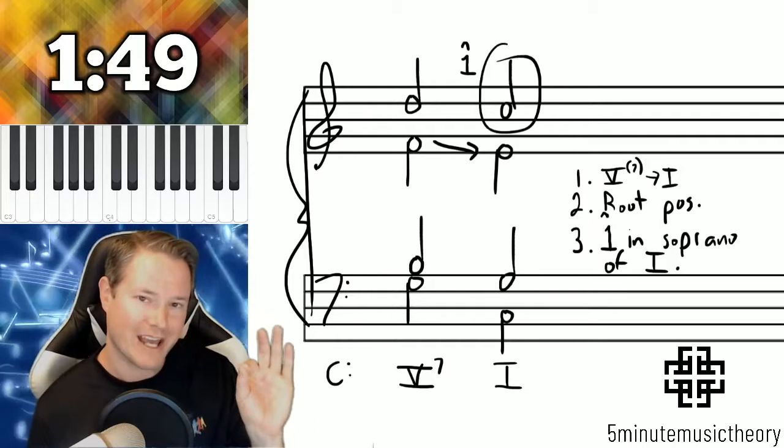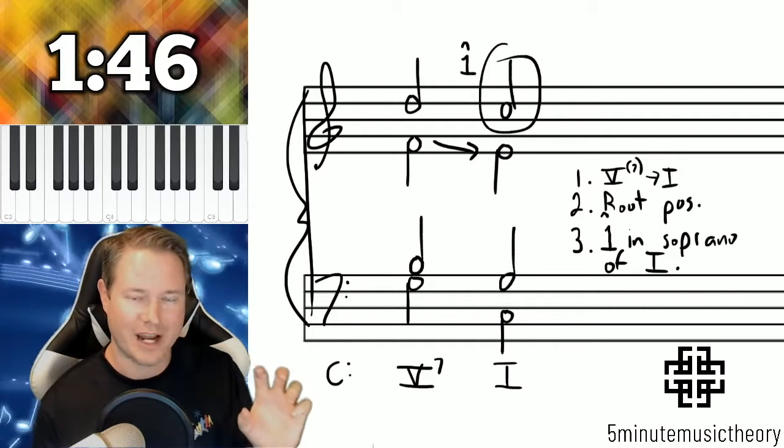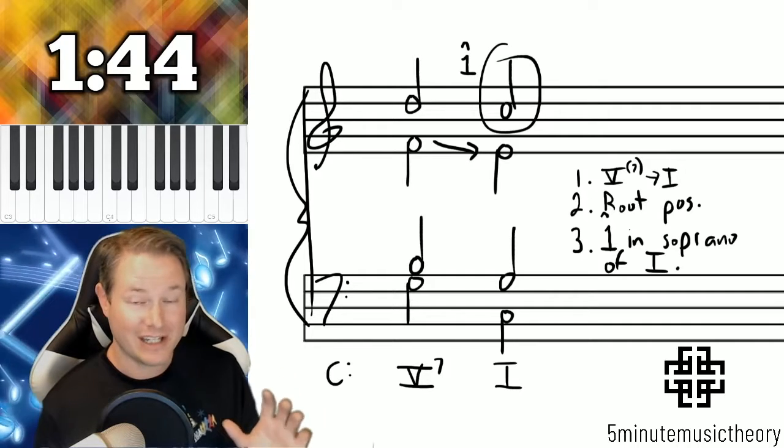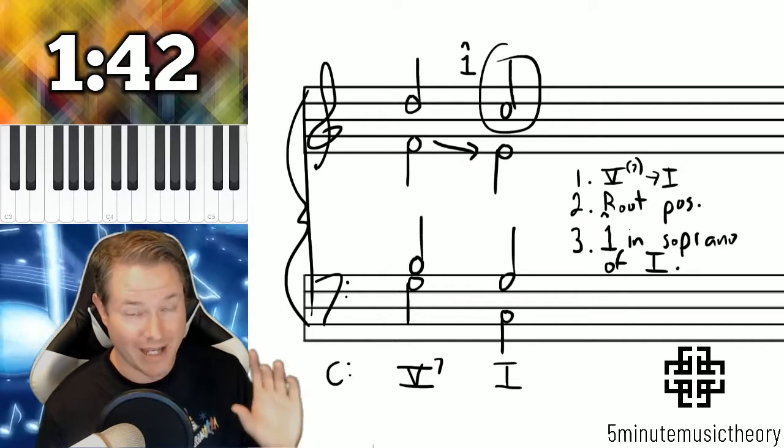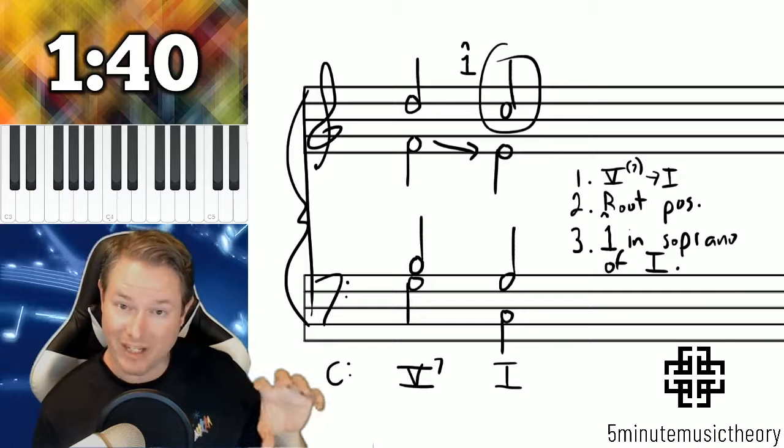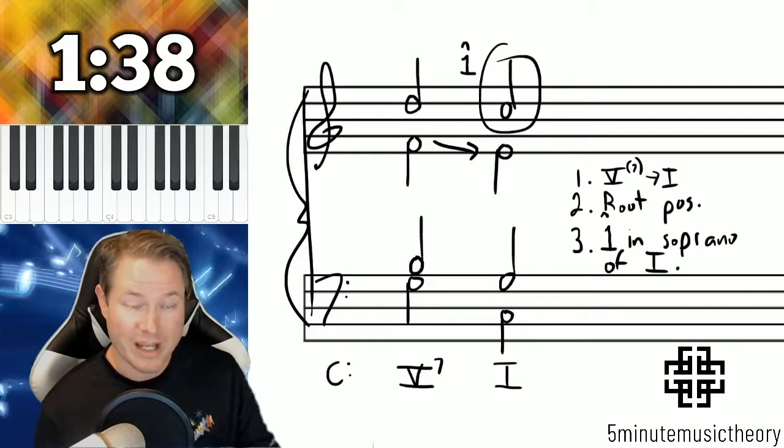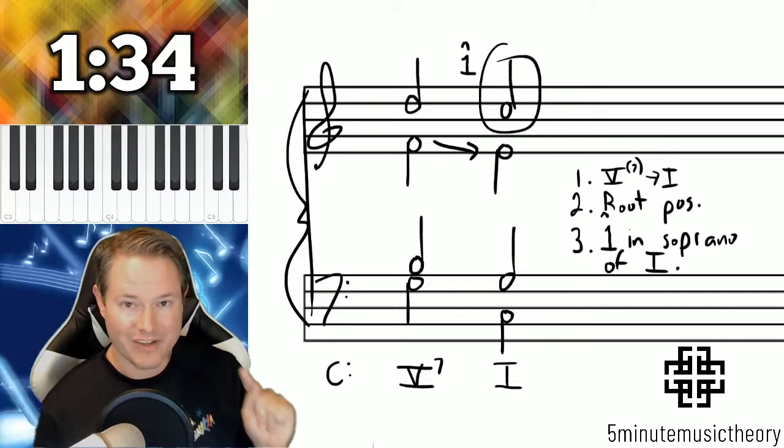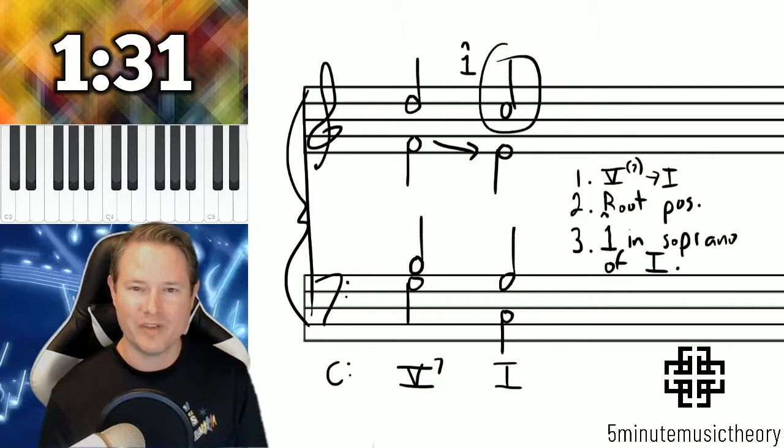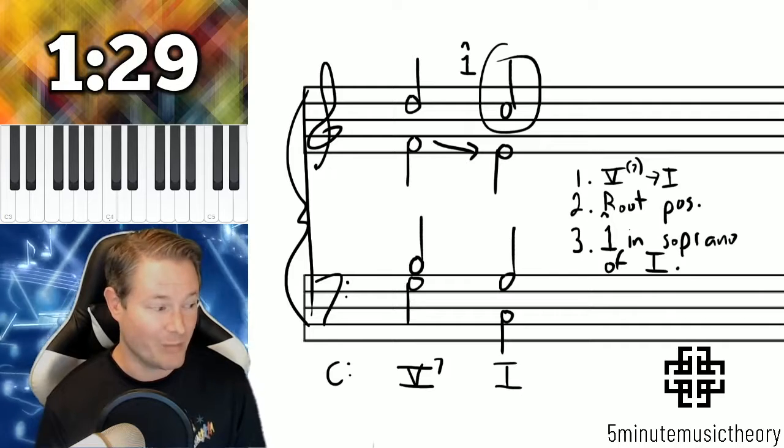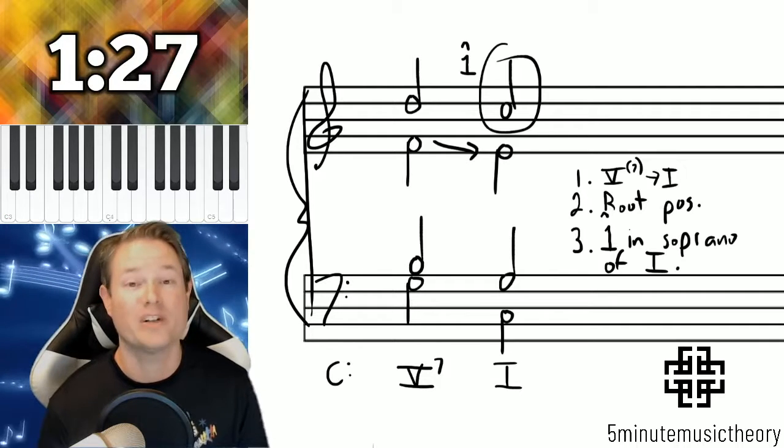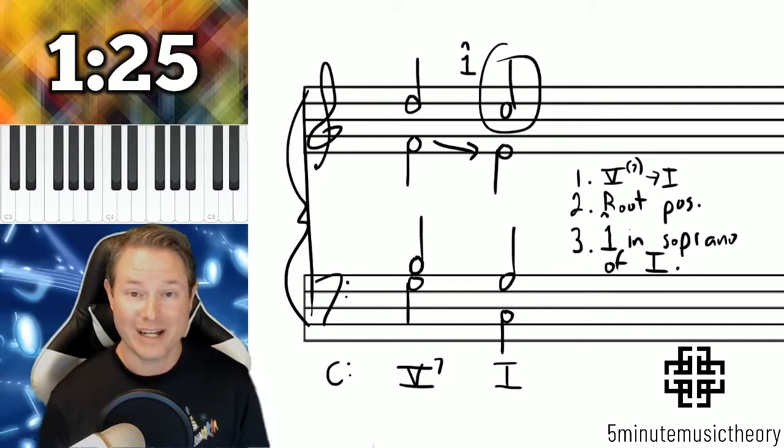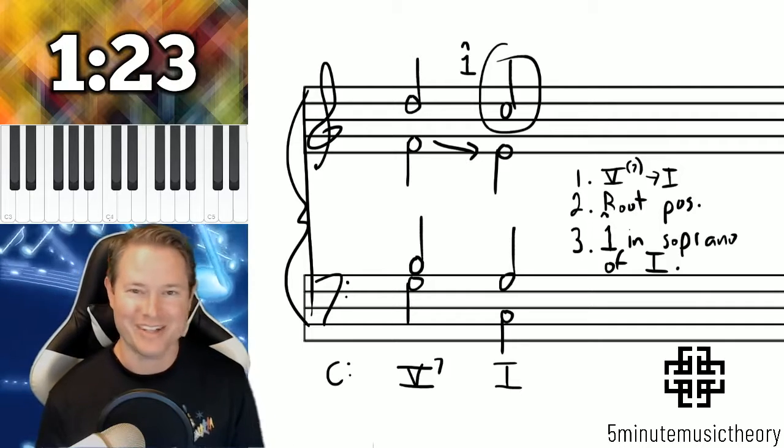And the P, the perfect part of that, the reason it's perfect is this is the strongest type of cadence. And in a PAC, it's specifically a dominant triad or seventh chord. So specifically a dominant chord to a tonic chord, both in root position with the first scale degree in the soprano of the tonic chord. That's a little bit of a mouthful and a little bit to remember, but it's really important that we do remember that because all three of those need to take place when writing and looking at perfect, authentic cadences.